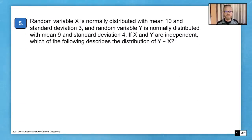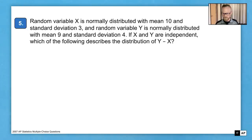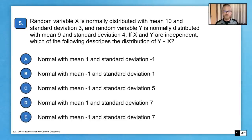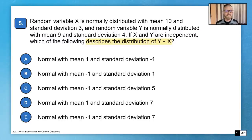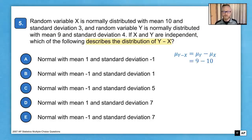Question five: random variable X is normally distributed with mean 10 and standard deviation 3, and random variable Y is normally distributed with mean 9 and standard deviation 4. If X and Y are independent, which of the following describes the distribution of Y minus X? We need to describe shape, center, and variability. All five answer choices show a normal shape, so we move to center. The mean of Y minus X is simply the mean of Y minus the mean of X: 9 minus 10 equals negative 1.